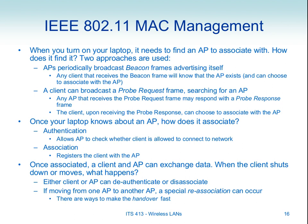A client may receive beacons from multiple access points — for example from this floor and from upstairs — and must choose one, since it can only connect with one access point at a time. The operating system, user, or application makes that selection. Passive discovery means the client just listens and waits until it receives a beacon.